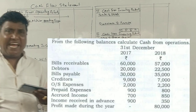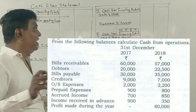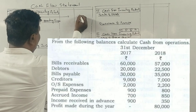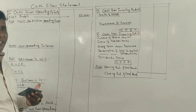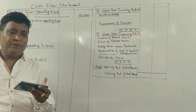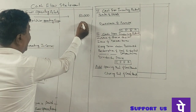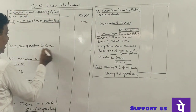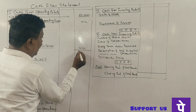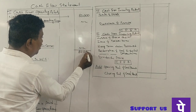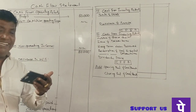Now get cash from operating activity. Net profit — profit made during the year is 80,000 rupees. There are no non-cash or non-operating expenses or non-operating income to adjust, so we start with net profit of 80,000 rupees.